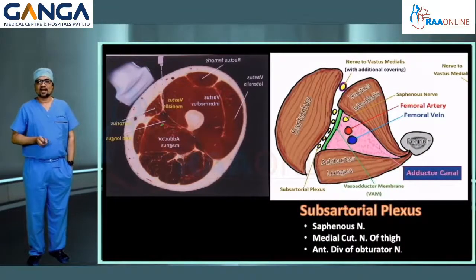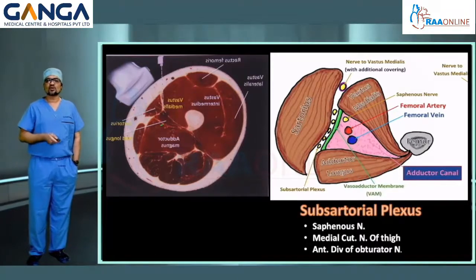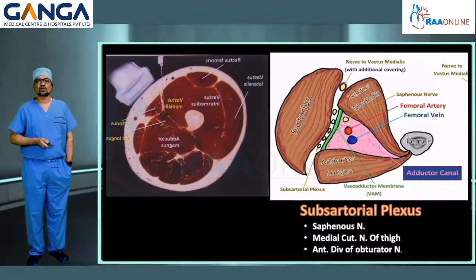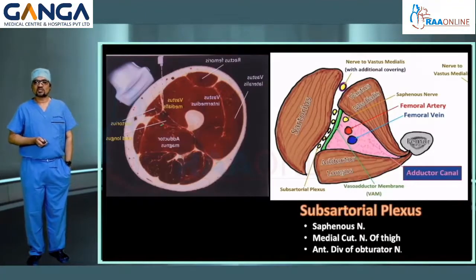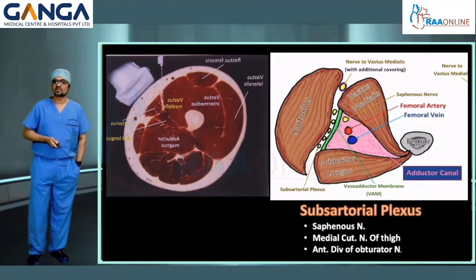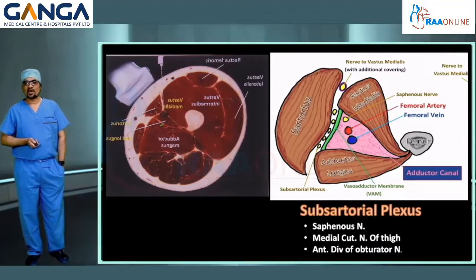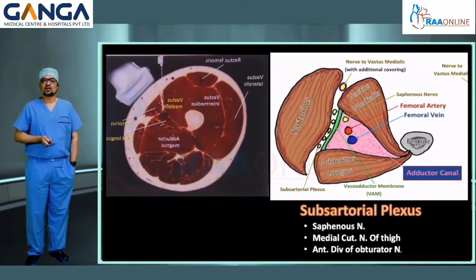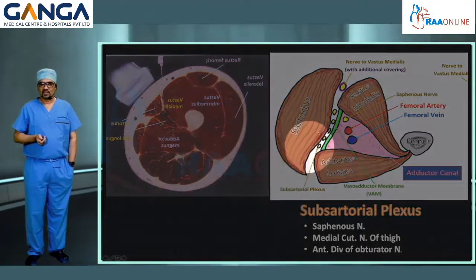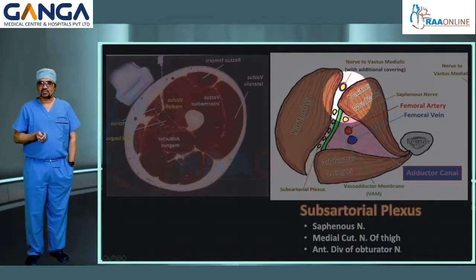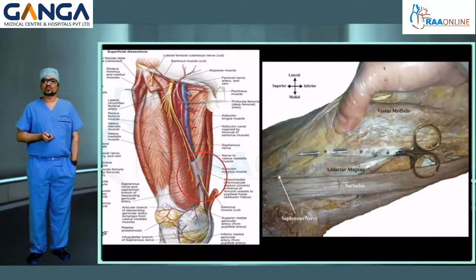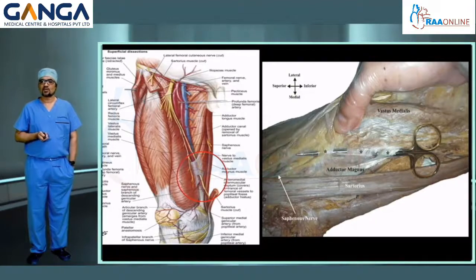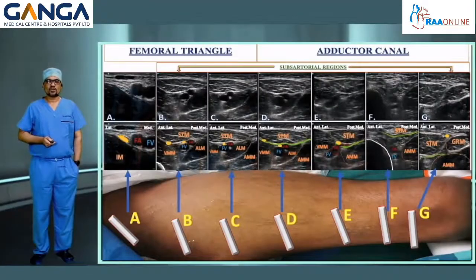The adductor canal is a musculo-aponeurotic tunnel lying over the middle aspect of the thigh under the sartorius. It is triangular in cross-section, bounded anterolaterally by vastus medialis muscle, posteriorly by adductor longus proximally and adductor magnus distally, and medially by a fibrous connective tissue known as the vaso-adductor membrane. The saphenous nerve lies inside the adductor canal, whereas the nerve to vastus medialis lies outside the adductor canal with a separate fascial sheath. The vaso-adductor membrane connects the vastus medialis muscle with the adductor muscles.